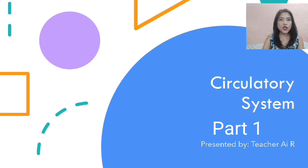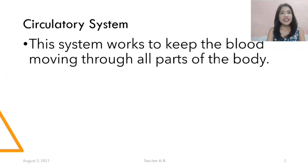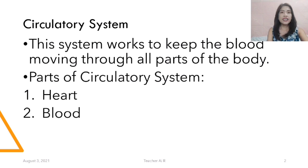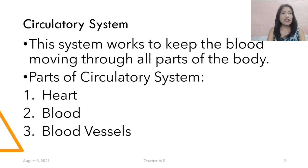Good day! This is Teacher Eye and in today's video, I am going to share with you about the circulatory system. This is a system that works to keep the blood moving throughout all parts of the body. The parts of the circulatory system are: number one, the heart; number two, blood; and number three, blood vessels.